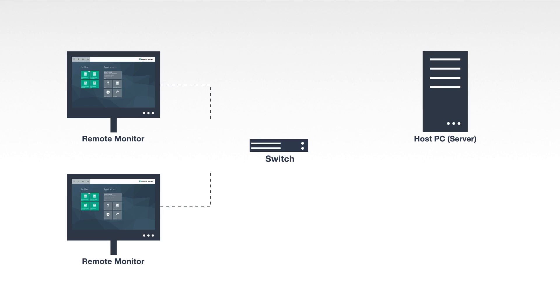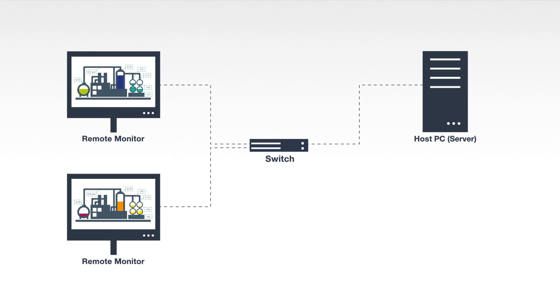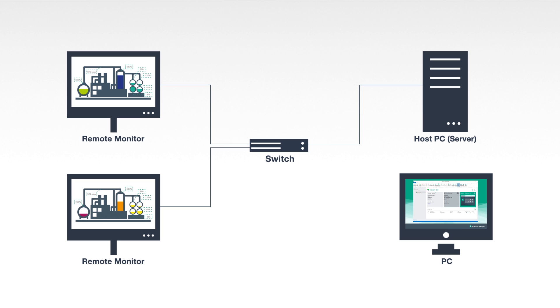With thin client-based remote monitors you are able to access information of the process control system or the MES in the field, for example to monitor processes. So far remote monitors had to be configured on site. The VisionNet control center now enables you to remotely set up your remote monitors via the network. It's installed on a standard Windows PC like this notebook that is connected to the same visualization network as the remote monitors.